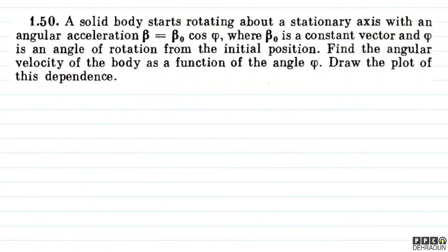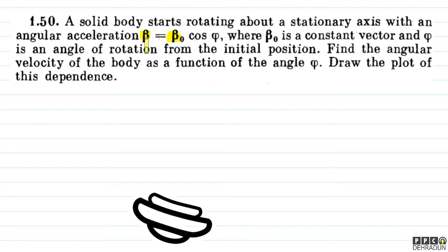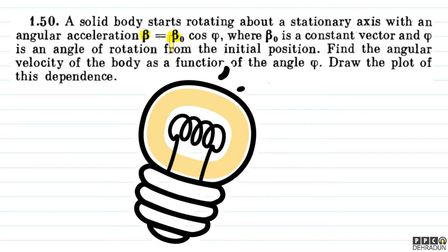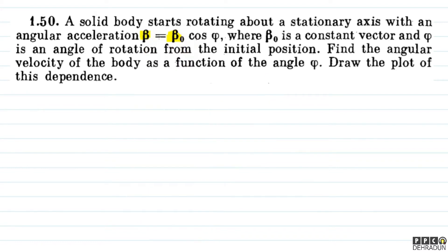Here we have to be careful — the angular acceleration beta equals beta-naught cos phi, where beta and beta-naught are bold, meaning these two are vectors. So the beta vector equals the beta-naught vector times cos phi.